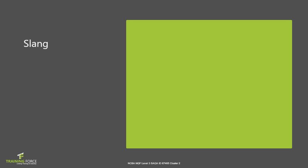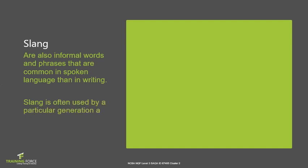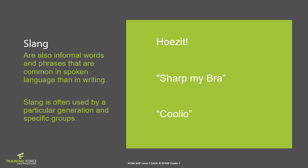Slang, on the other hand, involves informal words and phrases that are more common in spoken language than in written. Slang is often used by a particular generation and specific groups of people. Phrases like 'Who's it?', 'Sharp my bra,' and 'Coolio' all mean specific things within a specific group or generation of people.